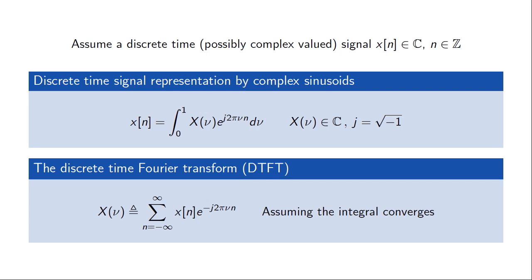What the discrete time Fourier transform says is that a discrete time signal x[n] can be built from simpler complex exponentials e^(j2π·ν), weighted together with a complex function X(ν) and integrated over the interval 0 to 1. To get the particular function x[n], these complex weights need to be given by the inner product between the signal and the conjugate of the complex exponentials. This formula is what we typically refer to as the discrete time Fourier transform, and the above formula is the inverse transform. We'll use j as the notation for the complex number.